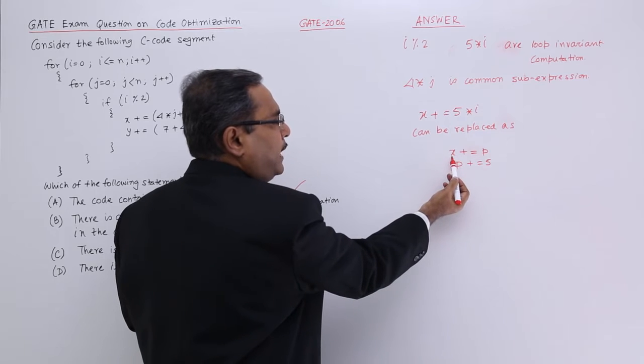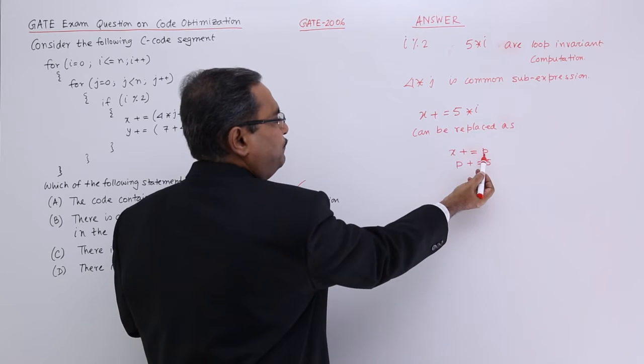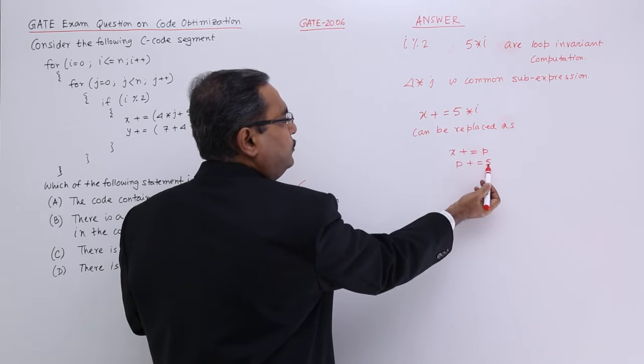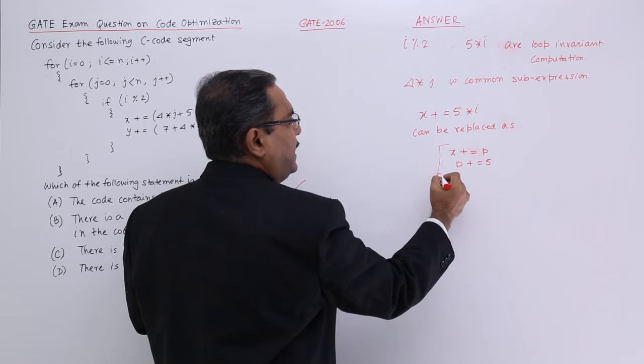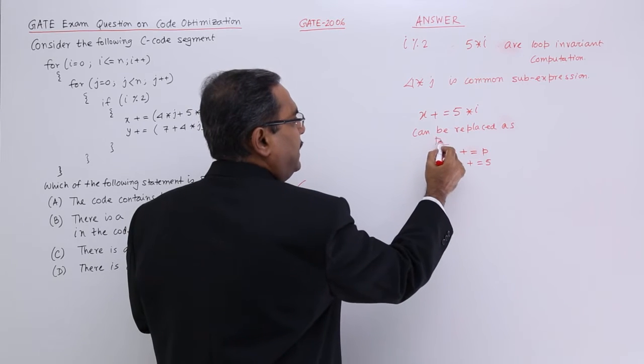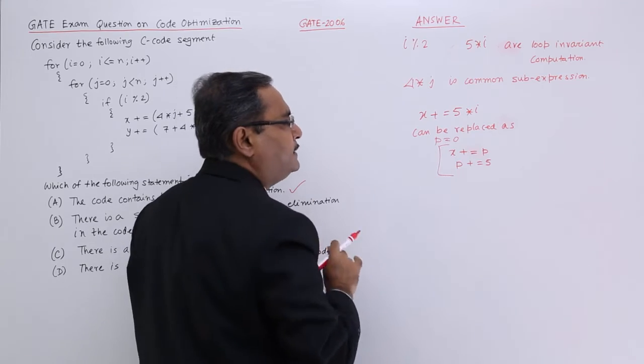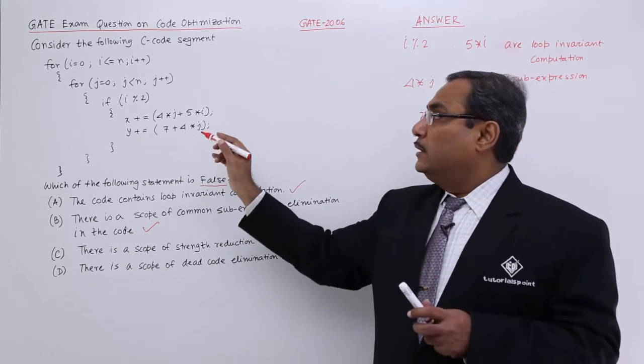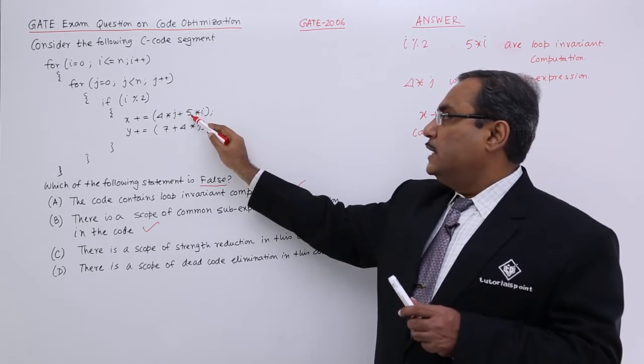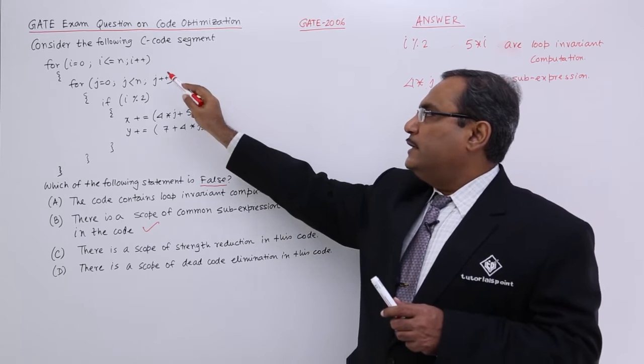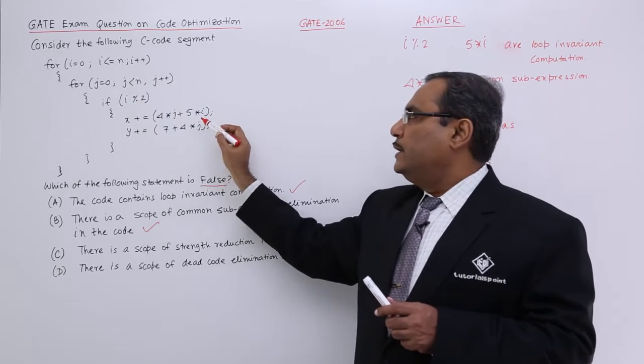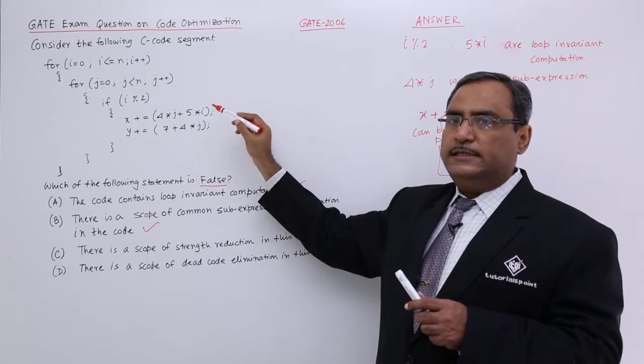My suggestion is that we will be writing x plus equal to p, and p plus equal to 5, and before entering into this loop I shall make p is equal to 0. That is my suggestion that means this 5 star i, you see i is getting incremented by 1 here, and here it is getting incremented by each term 5.